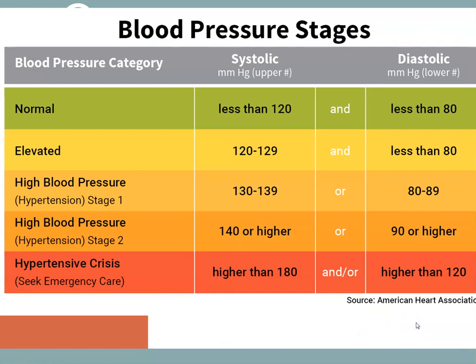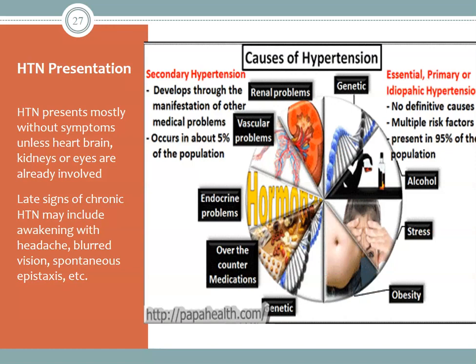You need to know the different stages of the blood pressure scale. Normal is systolic less than 120 and diastolic less than 80. Elevated is systolic 120 to 129 with diastolic still less than 80. Hypertension Stage 1 is systolic 130 to 139 or diastolic 80 to 89. Hypertension Stage 2 is systolic 140 or higher or diastolic 90 or higher. A hypertensive crisis is systolic higher than 180 or diastolic higher than 120.